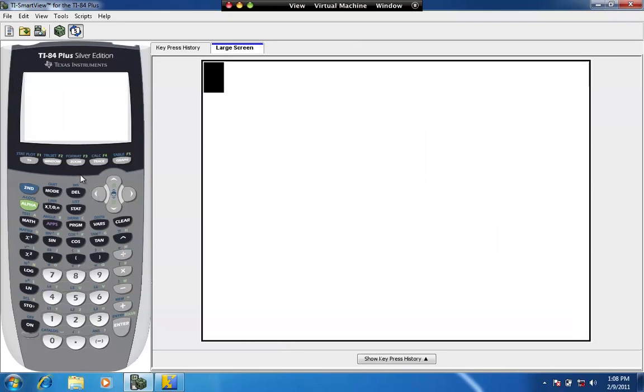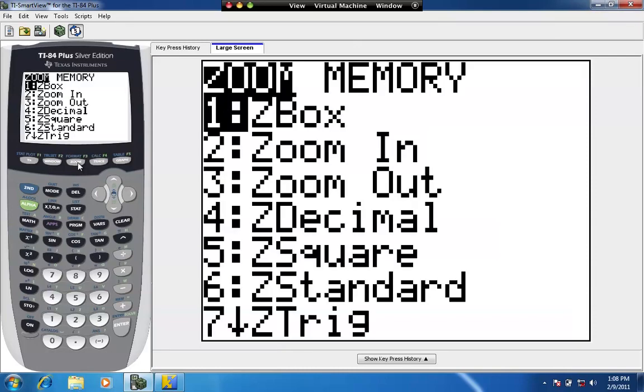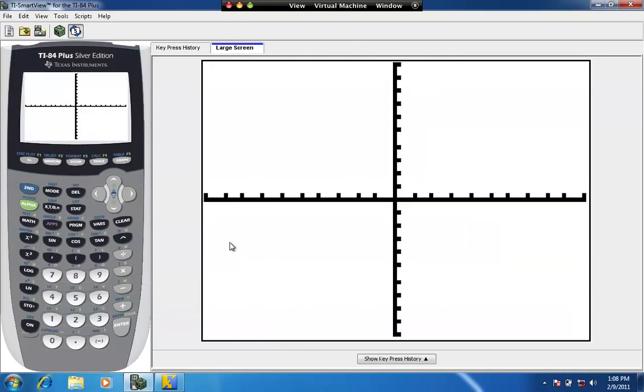We're going to start graphing any function by putting ourselves in the standard zoom. So we hit zoom, we can either press 6 or scroll down to number 6 and hit enter, and that will bring us to the standard zoom.